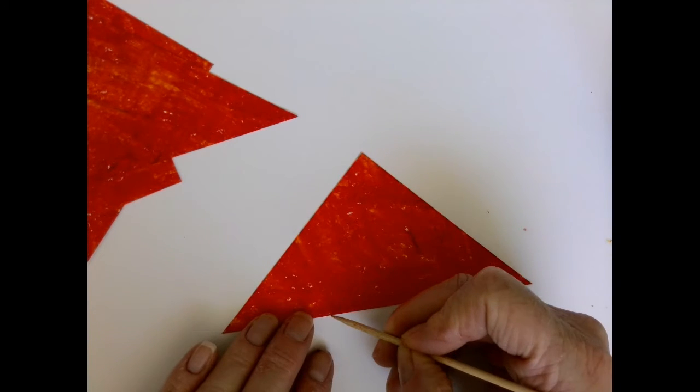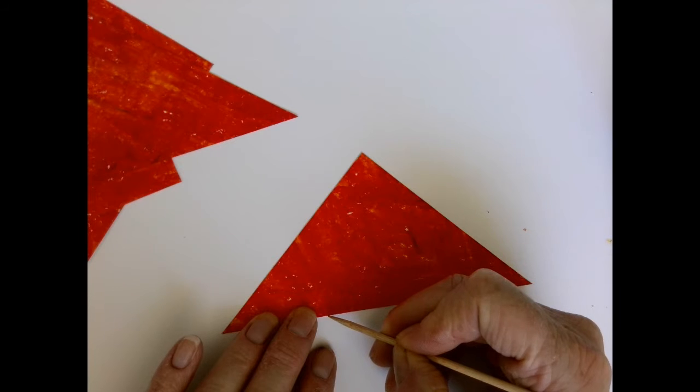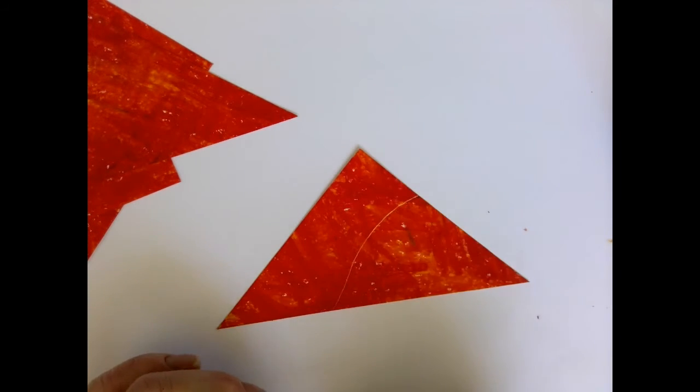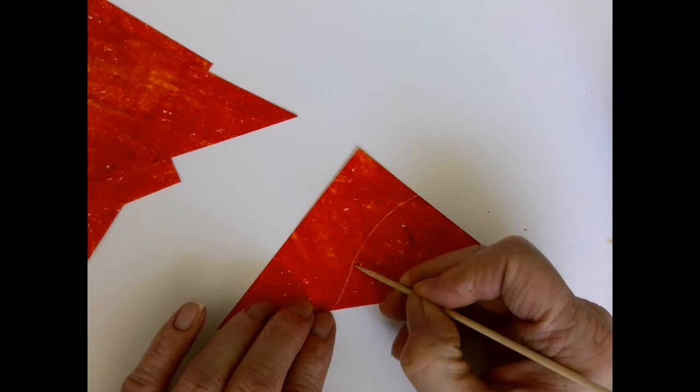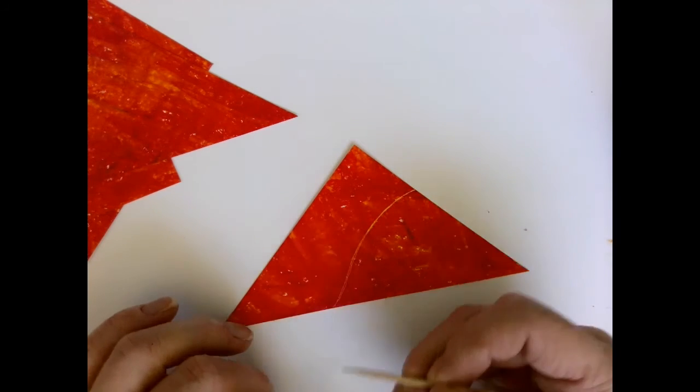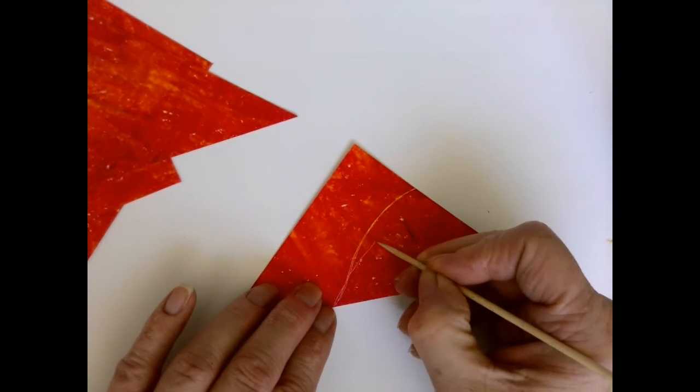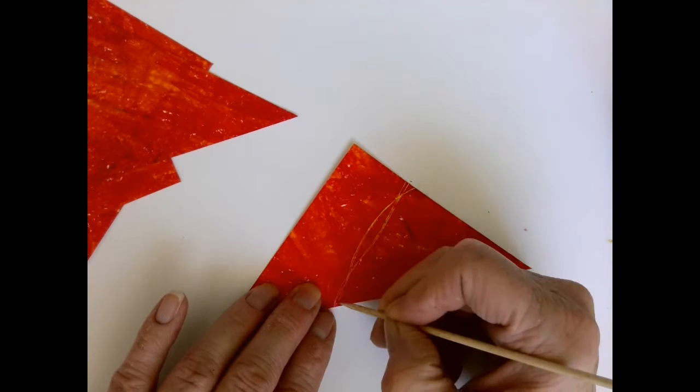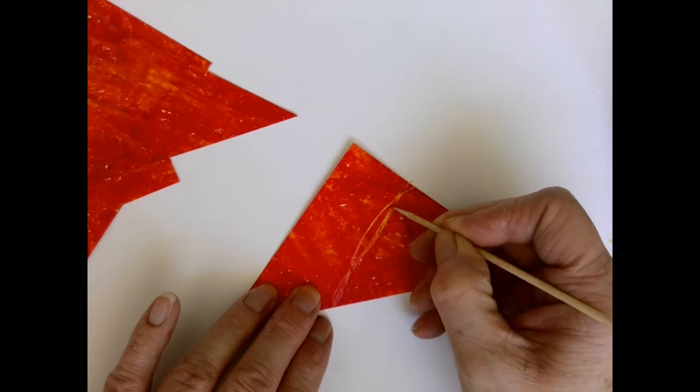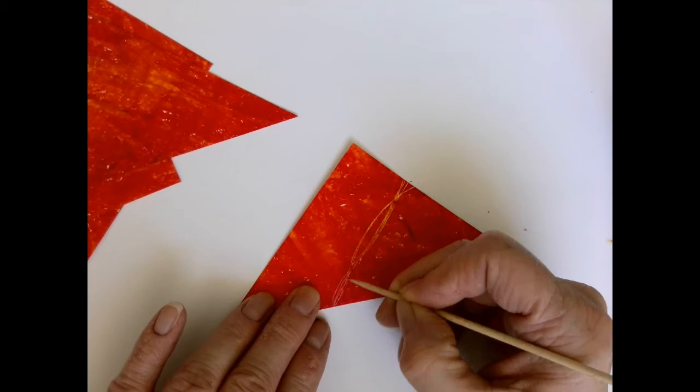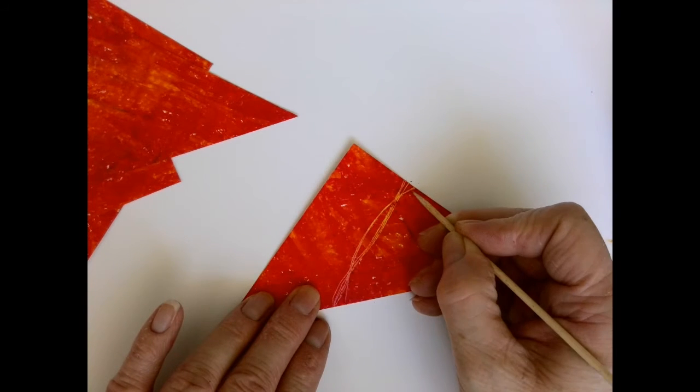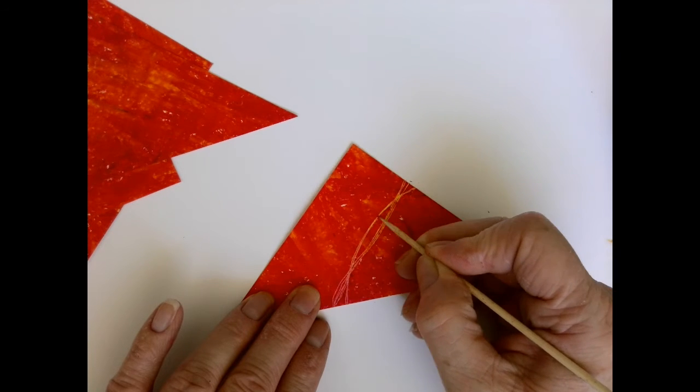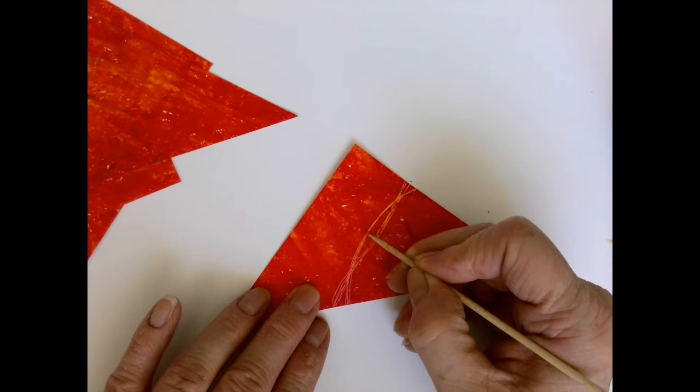I'm taking just a wooden barbecue skewer from Dollar Store and I am just randomly going to do sort of line work. And you can see you're using a subtractive method. So you're taking something out or off to create this piece. First you added and now you're subtracting. It's just really fun to see the line come out with your skewer.